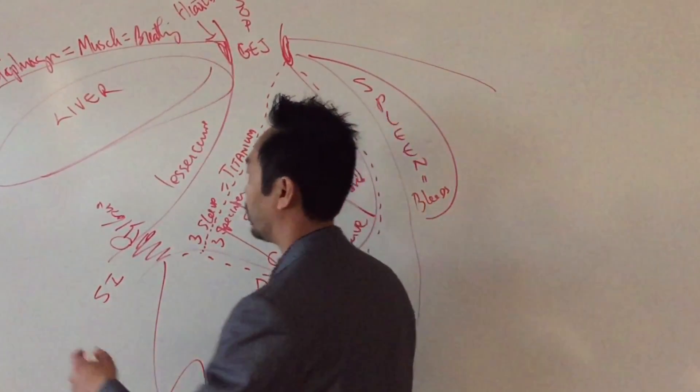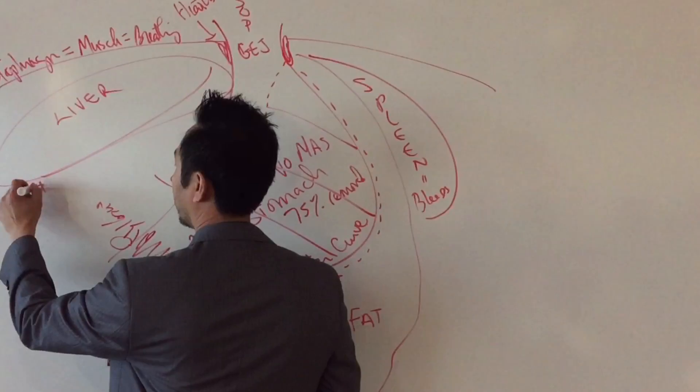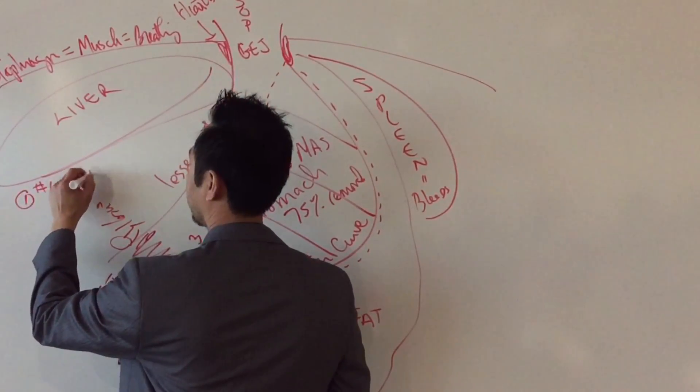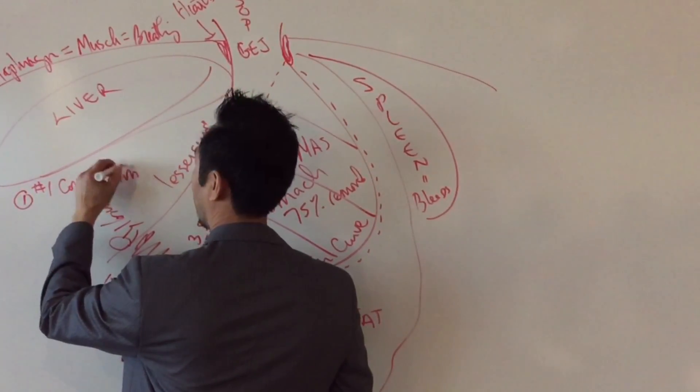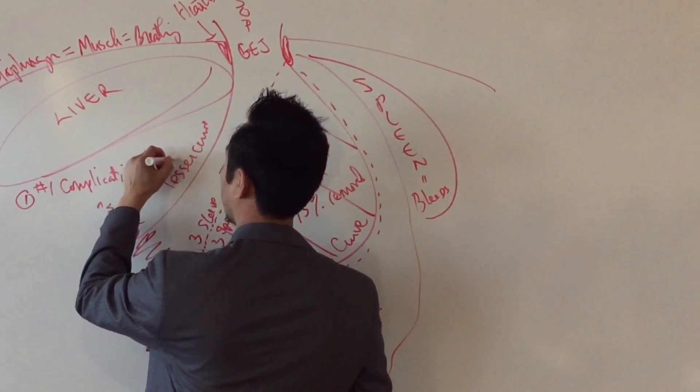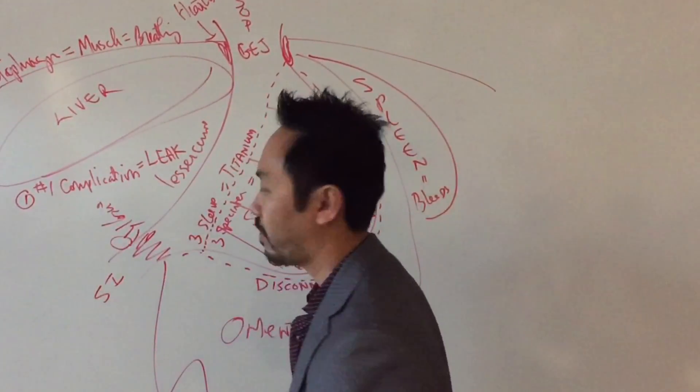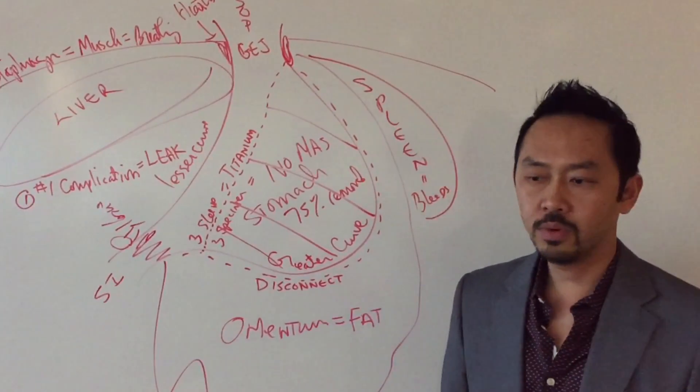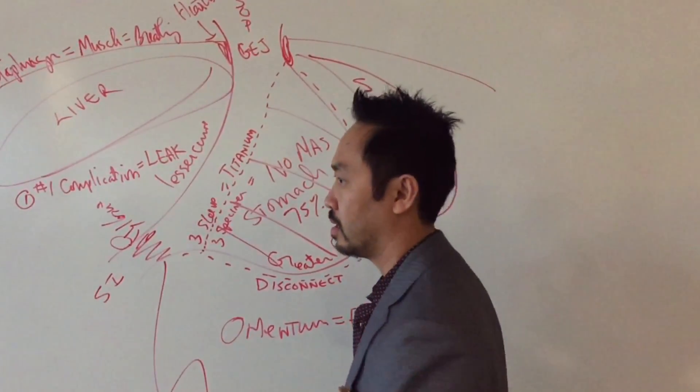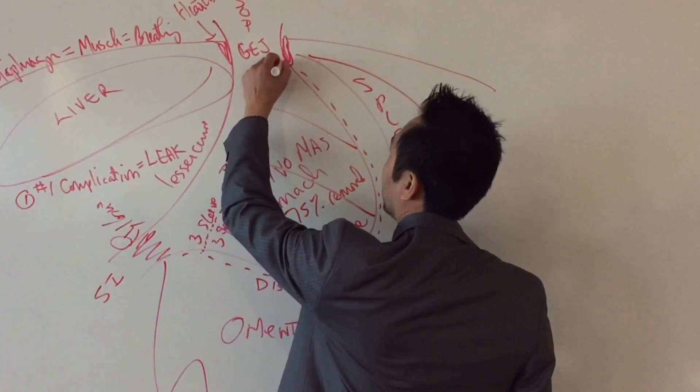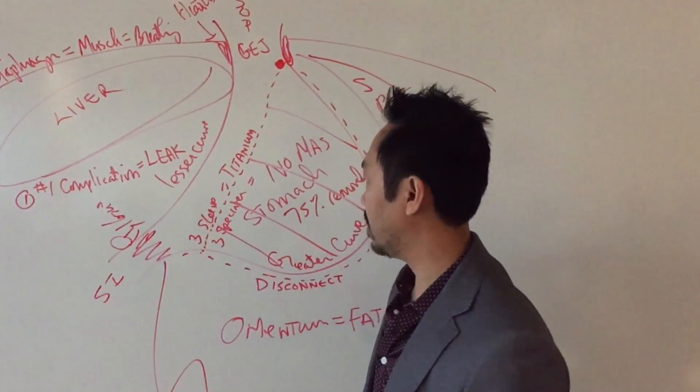So we're going to talk about the number one complication we worry about is what? Leaks. If it's going to leak, where is it most likely going to leak? GE junction. Here you go. Up here at the corner at the GE junction.